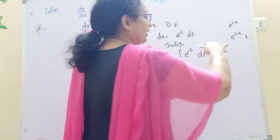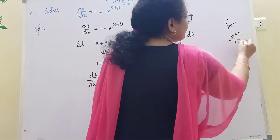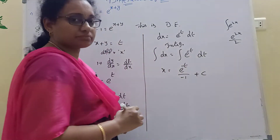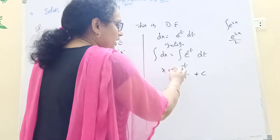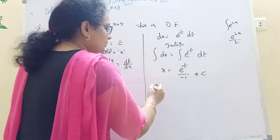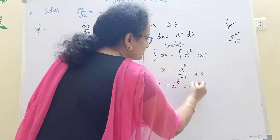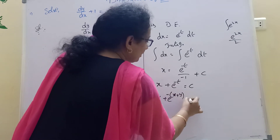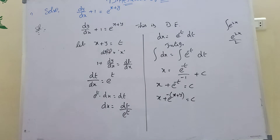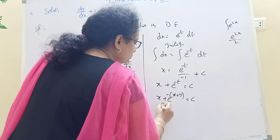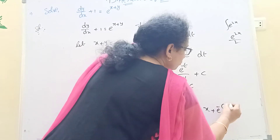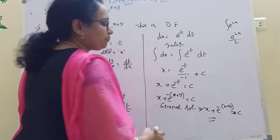The result is e^(–t) divided by –1 plus c. Substituting back t equals x plus y, we get x plus e^(–(x+y)) equals c. Therefore x plus e^(–(x+y)) equals c is the general solution.